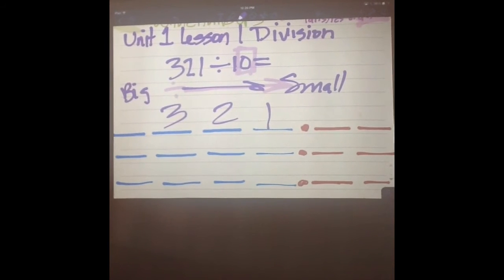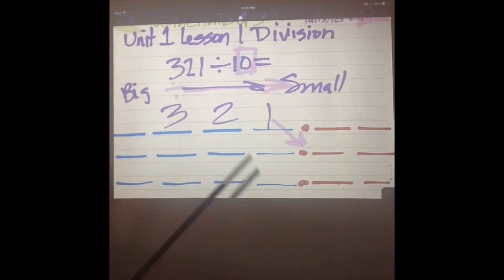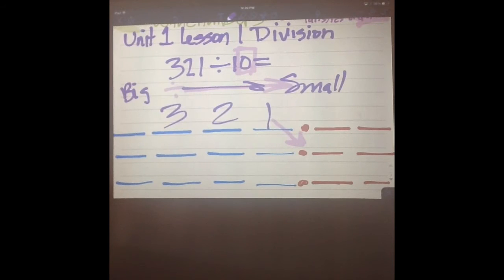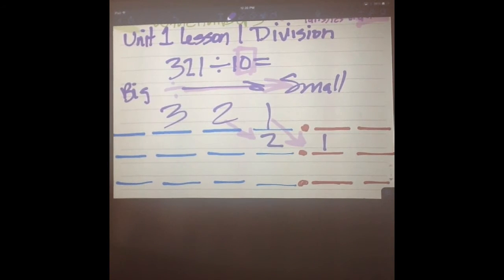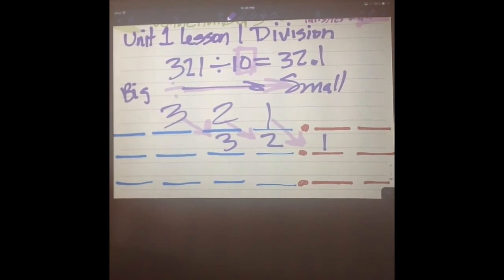So we're going to shift it over one place. I want you to draw the arrows just like that. We're going to shift the one over. Shift the two over to the right one space, and we're going to shift the three over one space, and that's going to be 32.1. So our answer is 32.1. Do you understand? Yes. Do you see how easy that is? Yes.